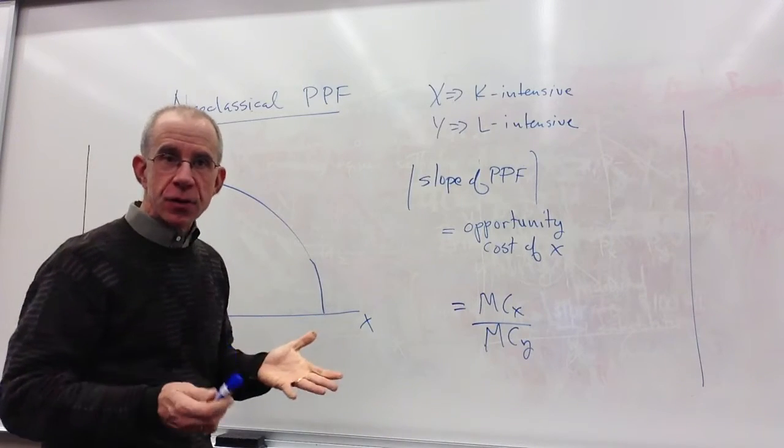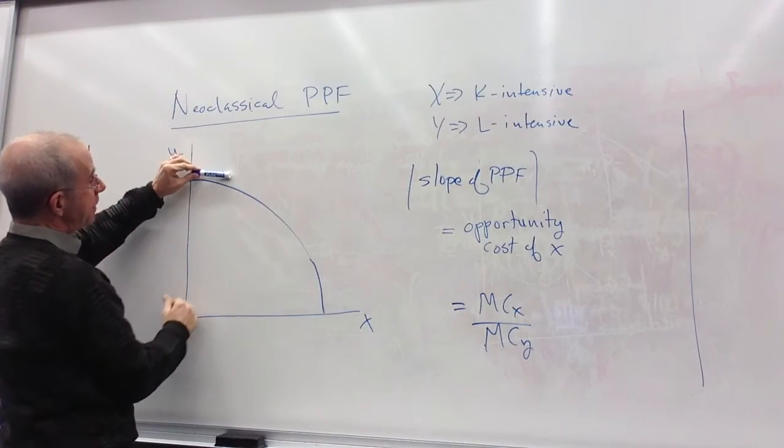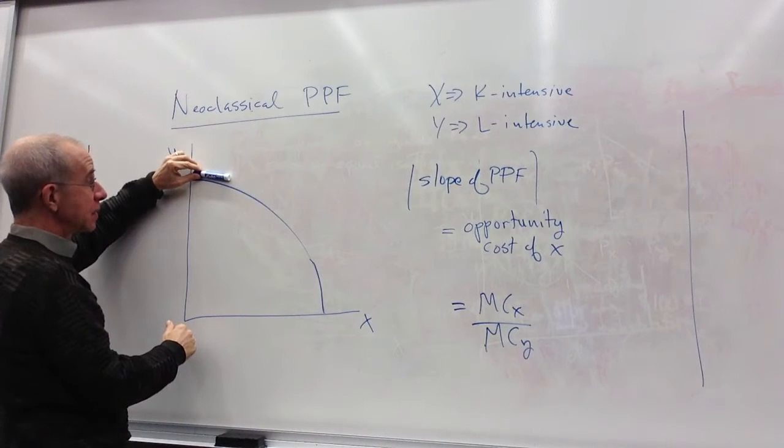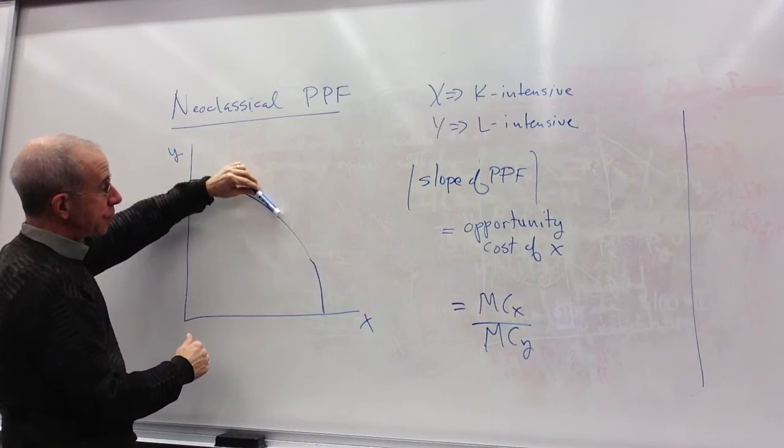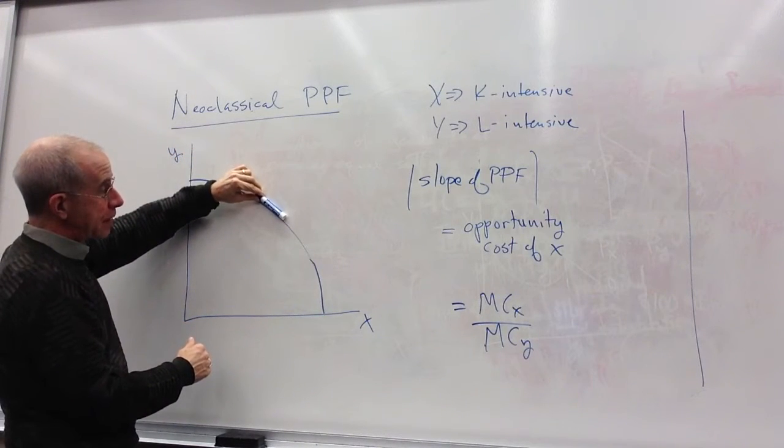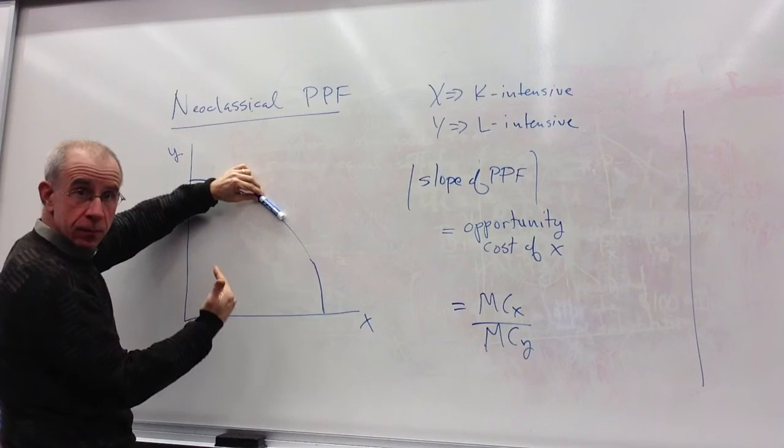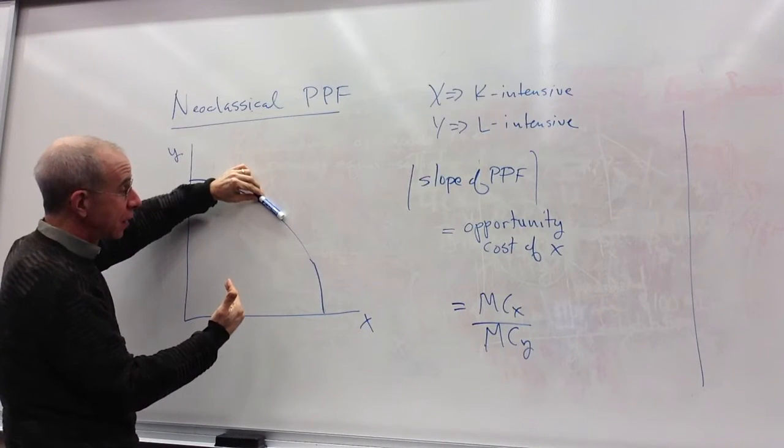Just geometrically, the slope of the PPF up here is relatively flat. As you produce different combinations of Y and X, the slope gets steeper.